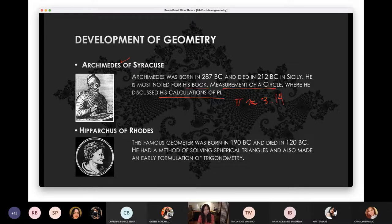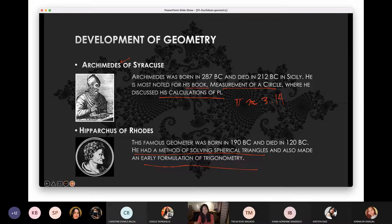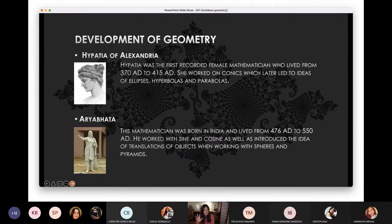Hipparchus of Rhodes, he's the one who had a method of solving spherical triangles and also made an early formulation of trigonometry. If you're familiar and I think you're familiar with trigonometry, it's the sine, cosine, tangent, et cetera. So he started that but he's not really the one who coined those concepts yet.